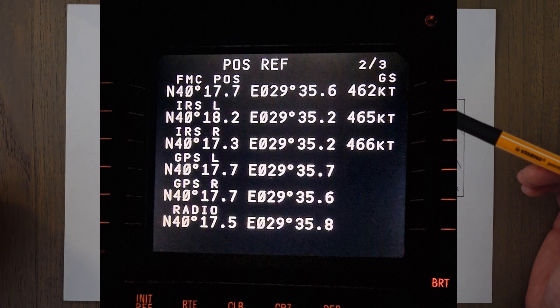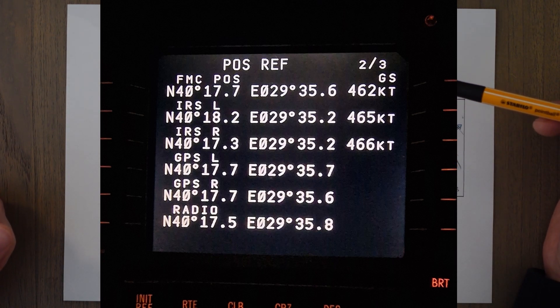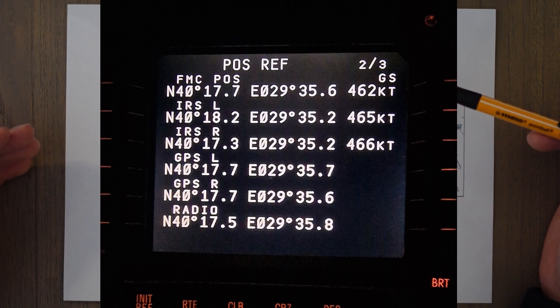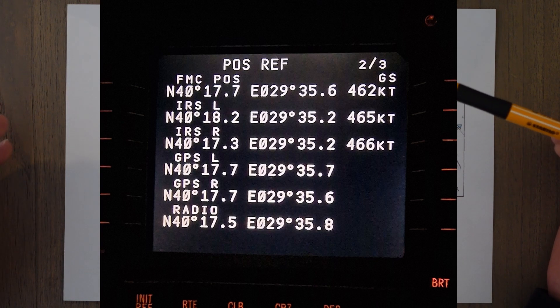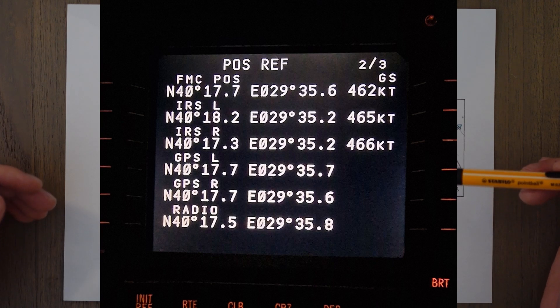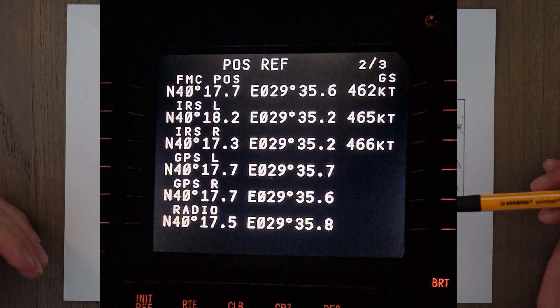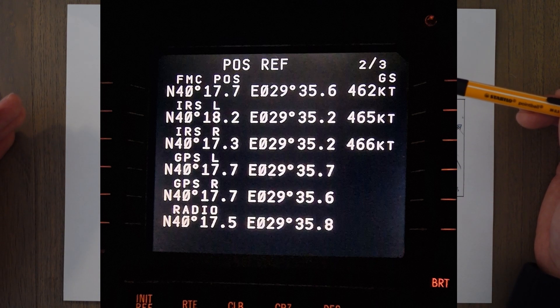So this is what the flight management computer positions look like. You can see we have the top position which shows that the flight management computer thinks it is at these coordinates. Then we have an IRS position which is a clever piece of internal navigation equipment that we'll learn about more when we look at the instrument section. Then we have the GPS positions and the radio position. If the GPS was jammed, for example, then these lines would be blank and we would see that the radio position would probably be the same as the FMC position, the flight management computer position.